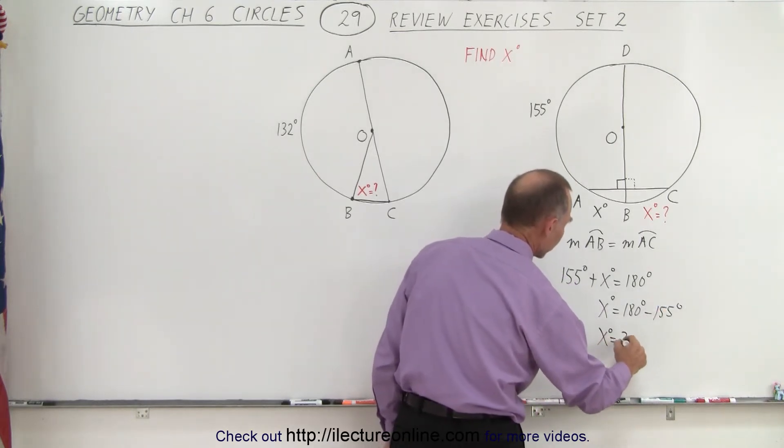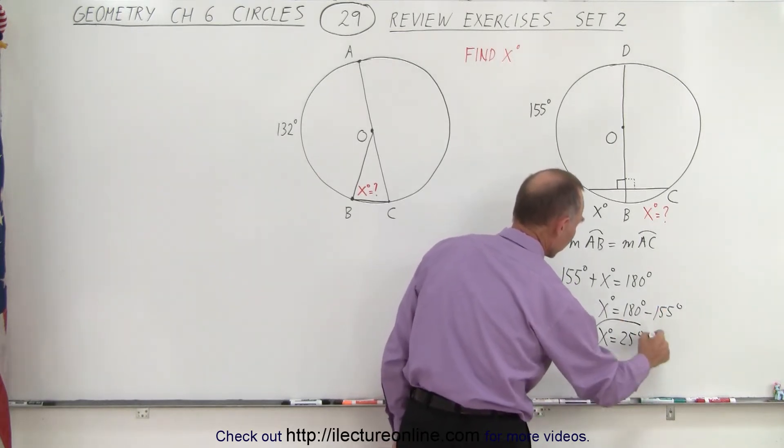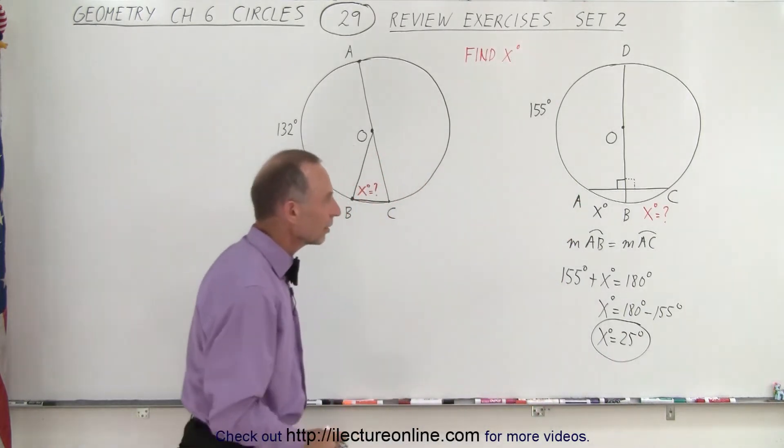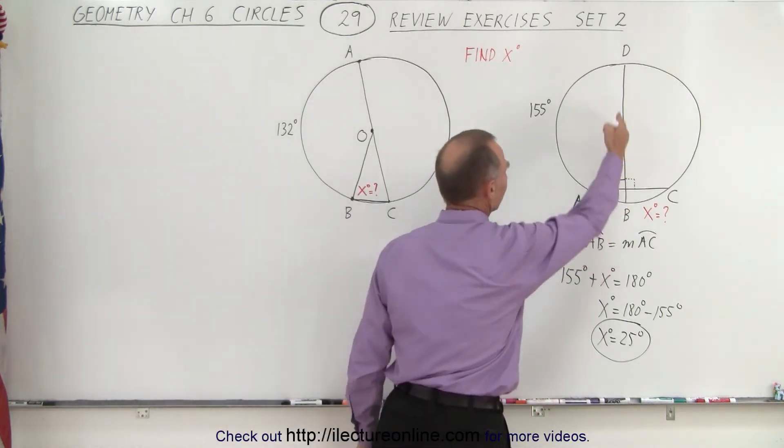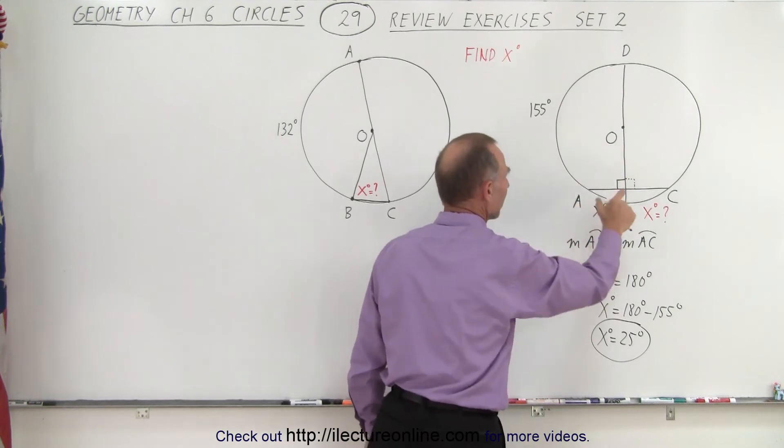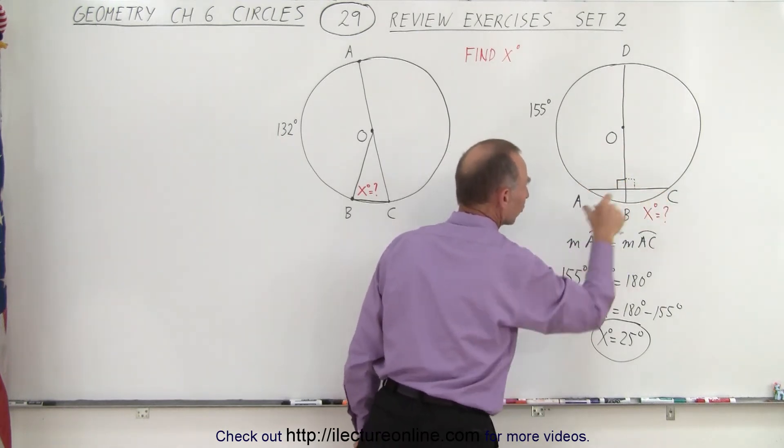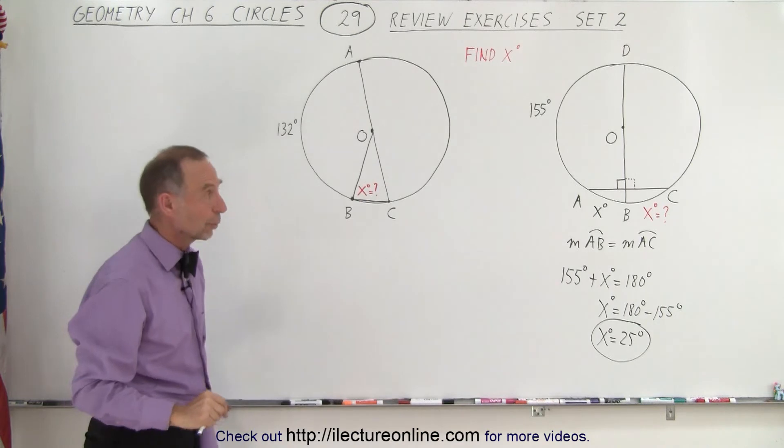Or X degrees must equal 25 degrees. So using that symmetry and the knowledge that if this is the diameter of the circle and this line is perpendicular to the diameter, these must be equal to one another and the measures of those must be equal to one another as well.